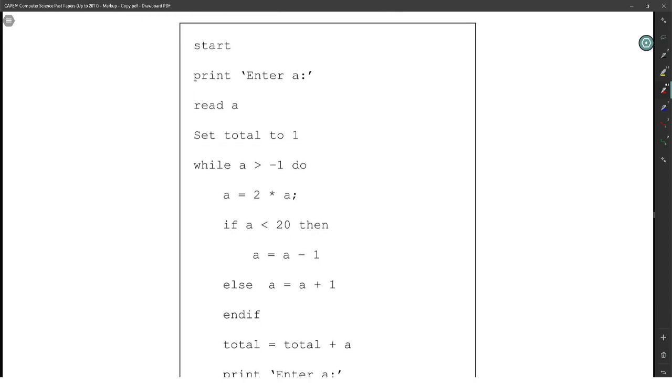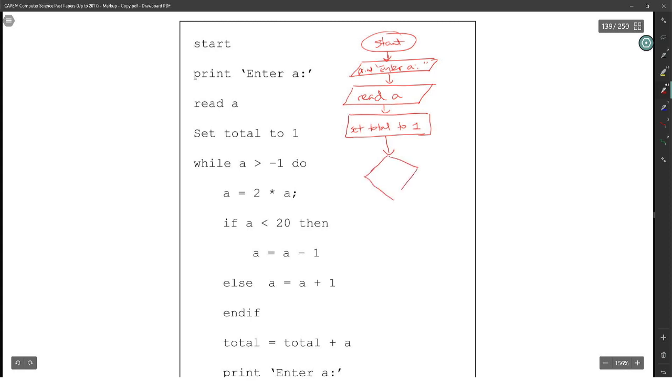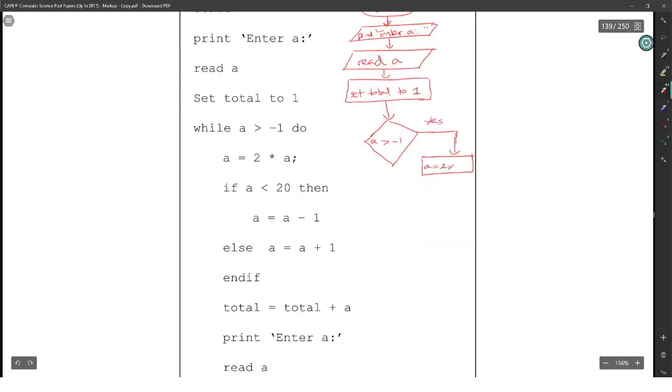Construct a flowchart to represent the following algorithm. This is so nice and easy. Flowchart. Start. You literally have it right next to you. Print enter A, which will be a parallelogram. And then set total to 1. Setting something to 1 is a process. So that's a rectangle. Then we have a while loop. Once you have a while loop, that is a diamond. Diamond is going to give you 2 options. So while A is greater than minus 1, if the answer is yes, what do we do? If the answer is yes, I have to say A is equal to 2 multiplied by A. Oh, there's a next diamond. There's an if again. So this if now will tell me if A is less than 20. It's a decision. I have a yes and I also have a no.